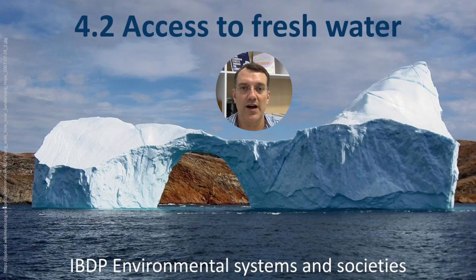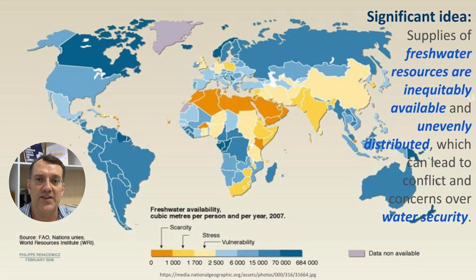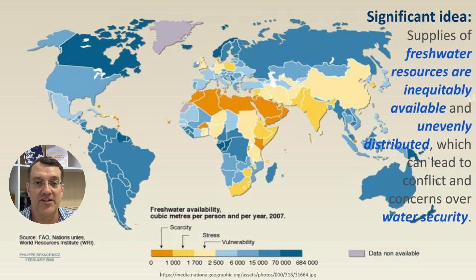Welcome back to another video for IB Environmental Systems and Societies. Today's topic is 4.2 access to fresh water. One of the main ideas in this topic is that people around the world have differing access to fresh water — some of that access is a result of natural processes and some of it is a result of socio-economic processes.